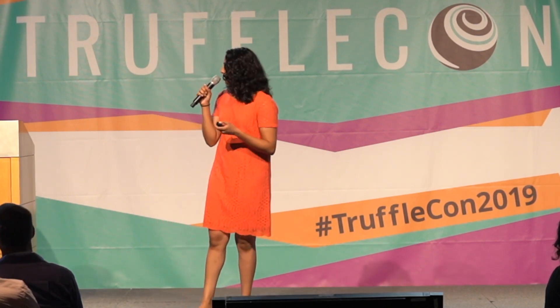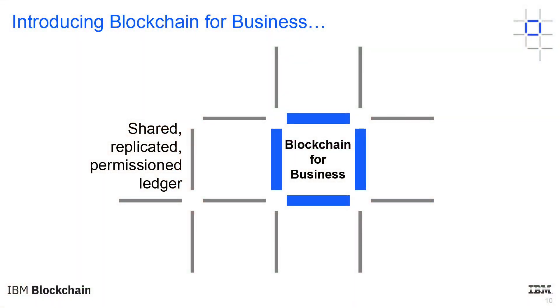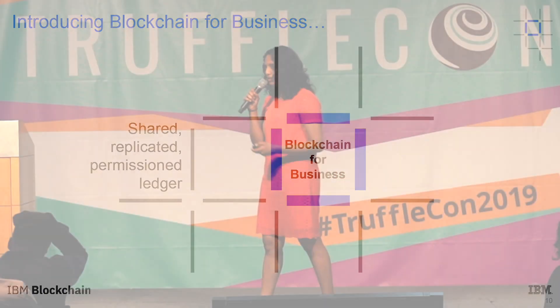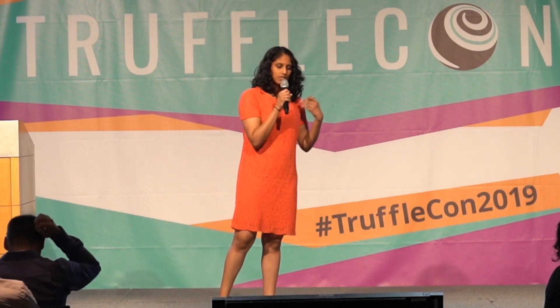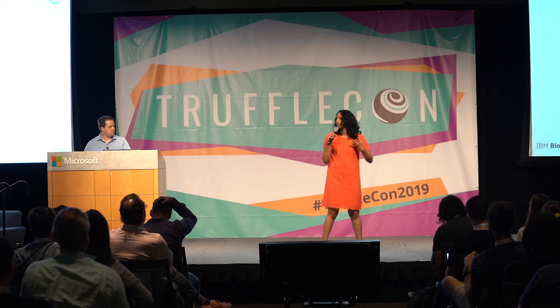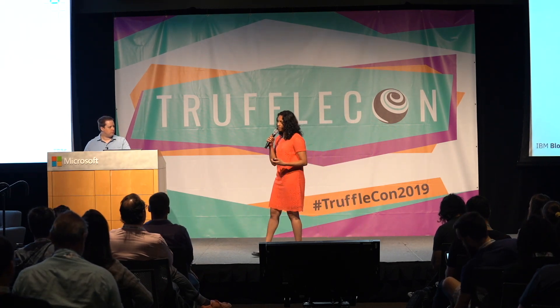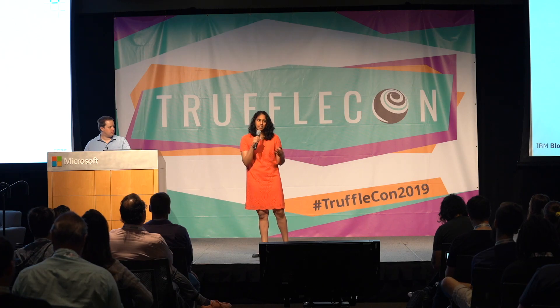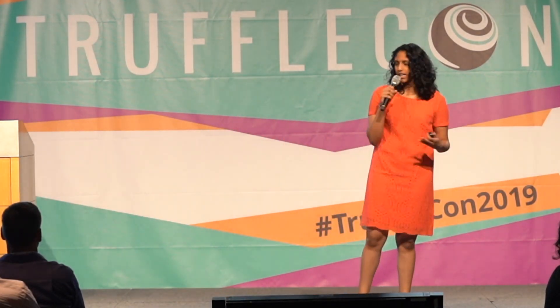The next one is Hyperledger Fabric. This is a permissioned blockchain platform. Fabric was designed with businesses in mind — the idea is building upon business networks and relationships that already exist, and making those more efficient. With that design decision behind Fabric, there are assumptions and choices that have been made. So it's very different from Ethereum, and I think it's very different from most permissioned blockchain networks out there as well.